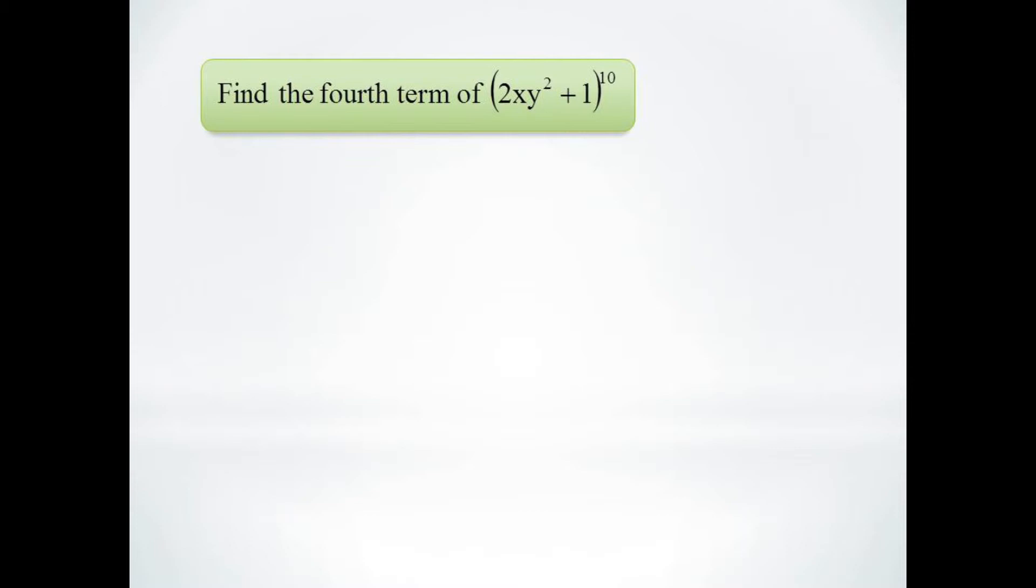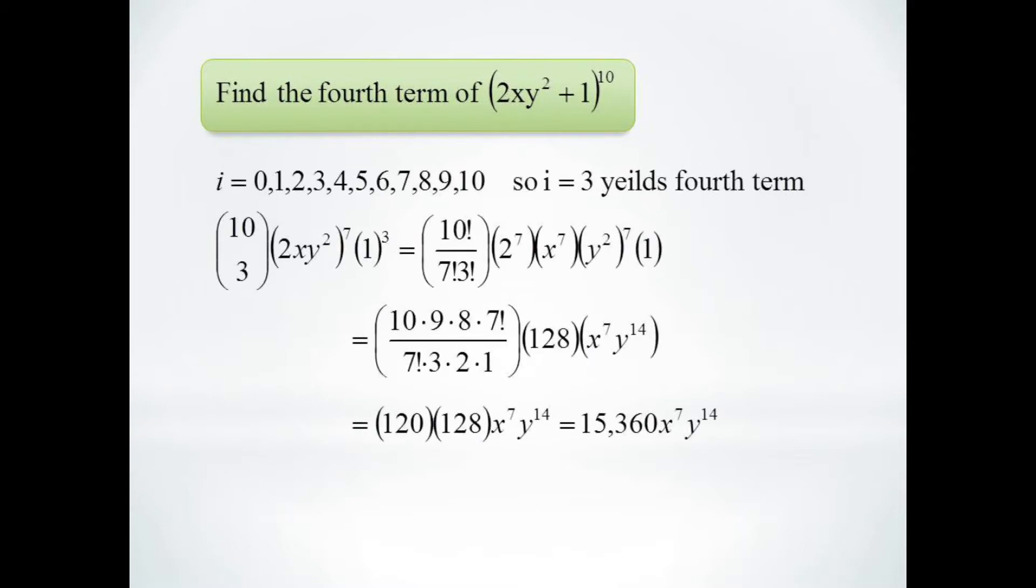You need to be a little careful because our formula starts at i equals 0. So the fourth term will actually correspond to i equals 3. Thus we will have 10 choose 3 times 2xy squared to the 7th times 1 to the 3rd.